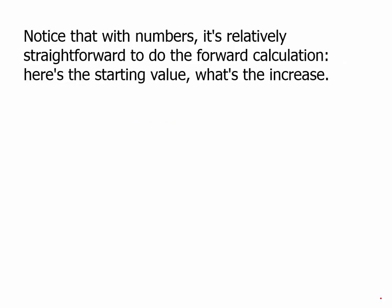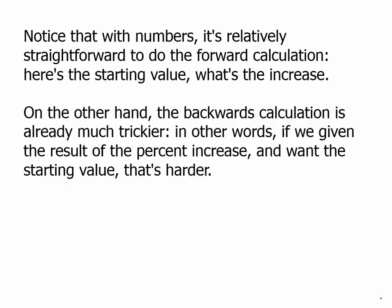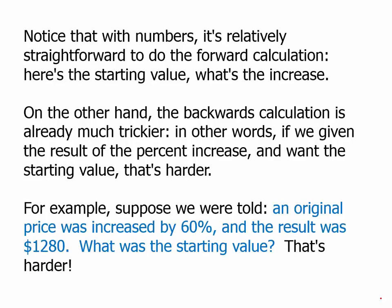With numbers, it's relatively straightforward to do that forward calculation — start with the starting value and get the percent increase. Going backwards, though, is much trickier. In other words, if we're given the result of the percent increase and we want the starting value, that's harder. For example, if the problem told us a price was increased by 60 percent and the result was 1280, what was the starting value? We know it's 800 because we just did the forward calculation, but figuring that out just by playing with numbers would be harder. This is where multipliers help a lot.